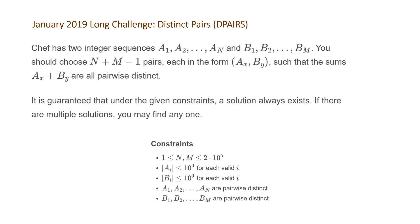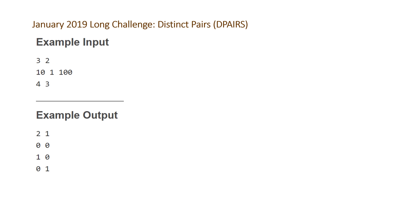Let's take a look at the example CodeChef provided. The first two numbers n and m are the lengths of our two arrays a and b, so a has length 3 and b has length 2. The next two lines correspond to the values of the elements: a consists of 10, 1, and 100, and b consists of 4 and 3.